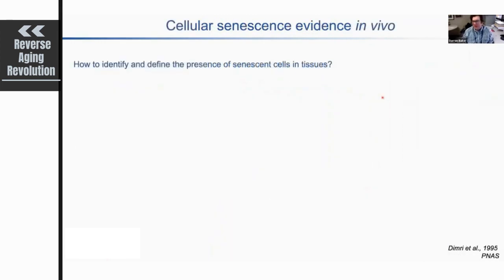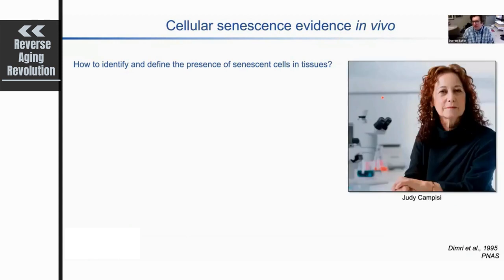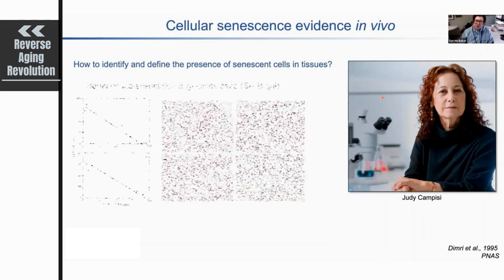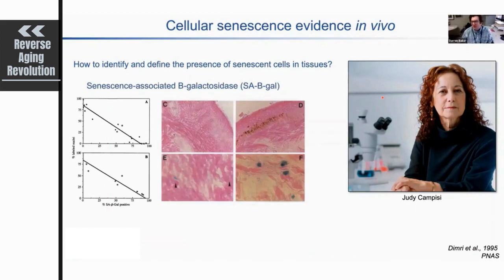The idea that senescence might play a role in vivo was still very unclear, as we didn't have great tools for identifying senescent cells. Despite her small stature, Judy Campisi — based at the Buck Institute in California — is a giant in the field of cellular senescence research. A study from her group, published 25 years ago in PNAS, described the accumulation of a phenotype known as senescence-associated beta-galactosidase activity — an enzymatic activity assay where lysosomes of senescent cells at a particular pH show activity against a specific substrate.